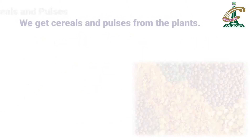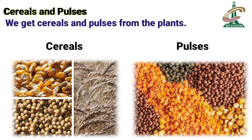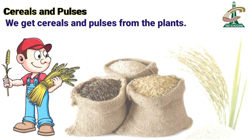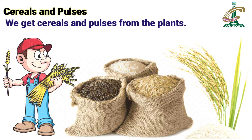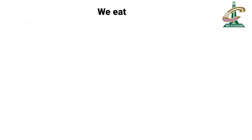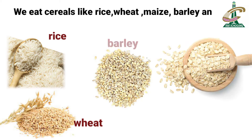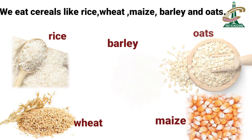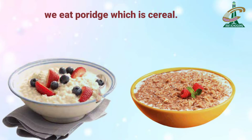We get cereals and pulses from plants. Cereals and pulses — what are these? Cereals are what we call अनाज. We eat cereals like rice, wheat, maize, barley and oats. In the morning we eat oats and wheat porridge. These are called cereals.